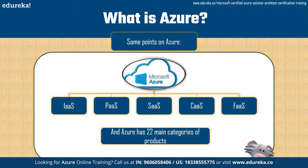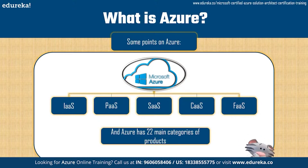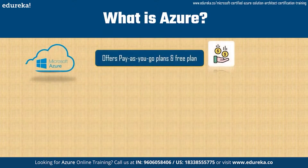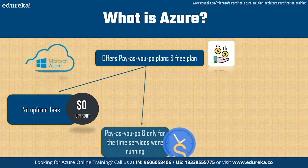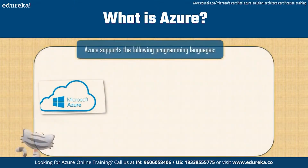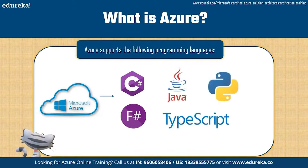Azure provides five distinct types of services: Infrastructure as a Service, Platform as a Service, Software as a Service, Container as a Service, and Functions as a Service. Azure has 22 main categories of products and over 600 services total. It operates globally in 60-plus regions and provides services to 140 countries and counting. Azure offers pay-as-you-go plans with no upfront fees, and a free basic plan valid for 12 months. Supported programming languages include C#, F#, Java, TypeScript, and Python.